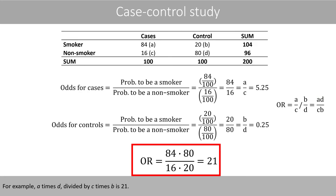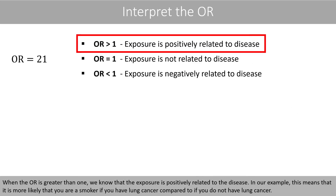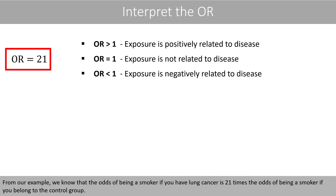For example, A times D divided by C times B is 21. When the odds ratio is greater than 1, we know that the exposure is positively related to the disease. In our example, this means that it is more likely that you are a smoker if you have lung cancer compared to if you do not have lung cancer. We know that the odds of being a smoker if you have lung cancer is 21 times the odds of being a smoker if you belong to the control group.